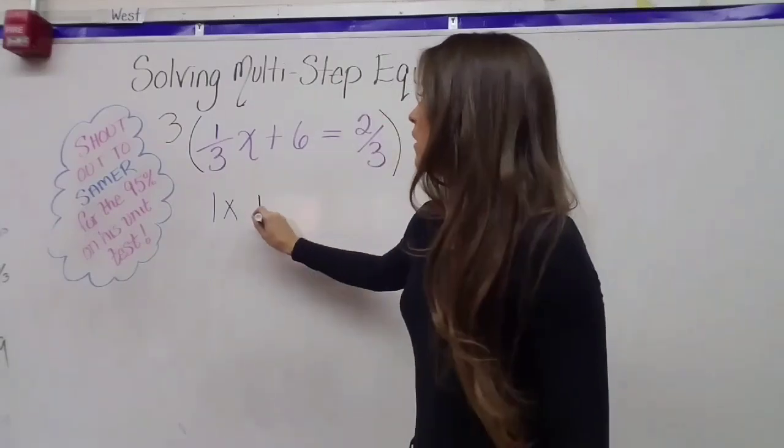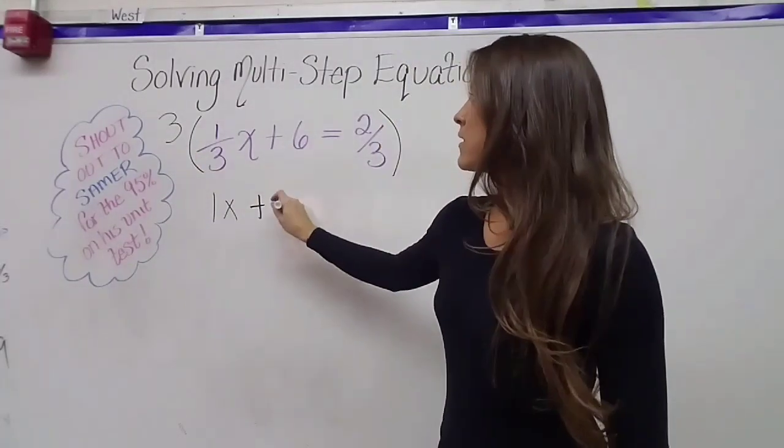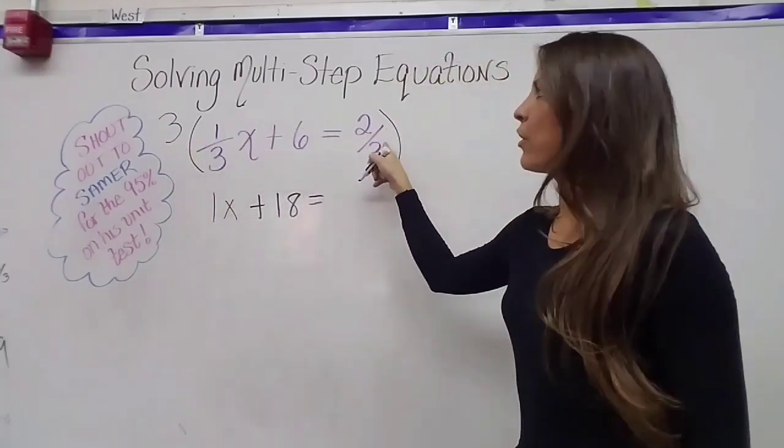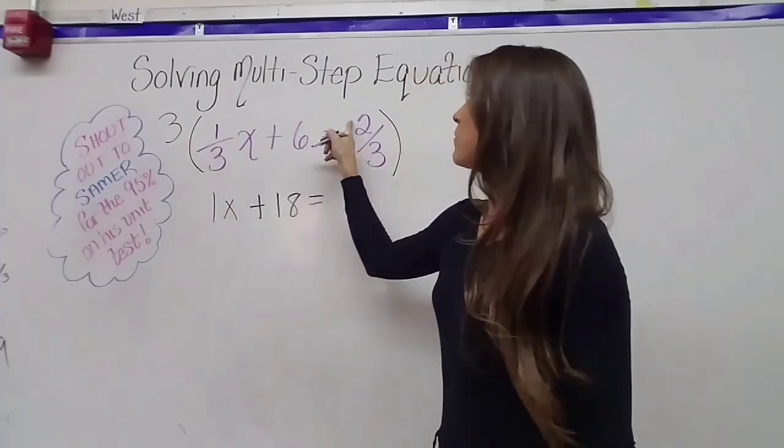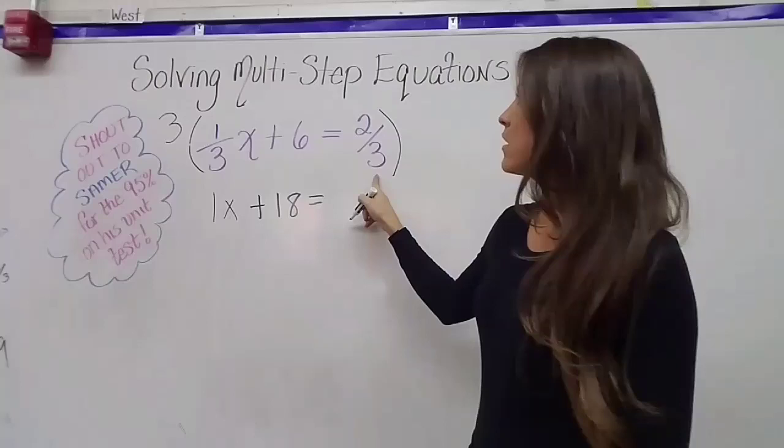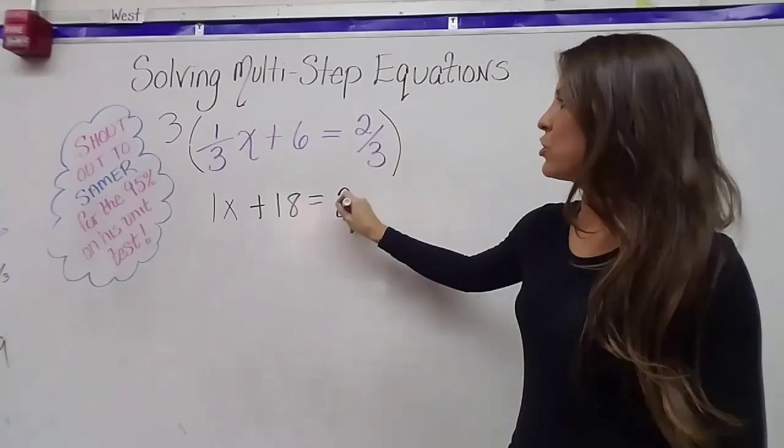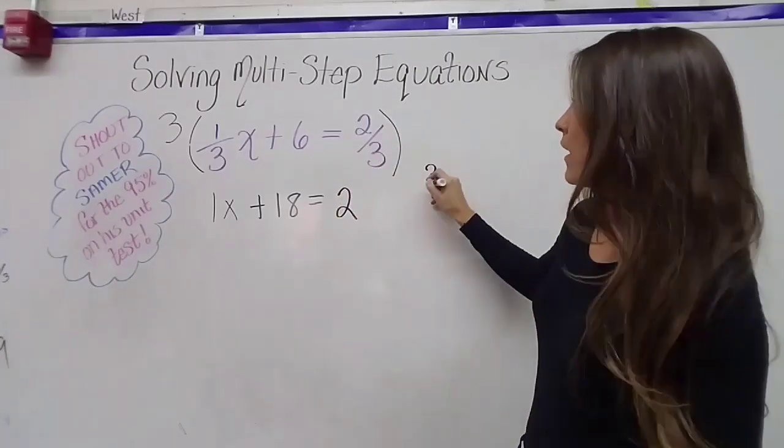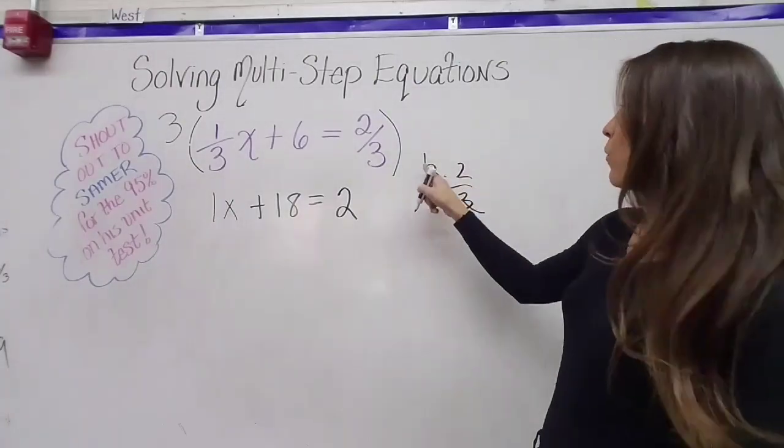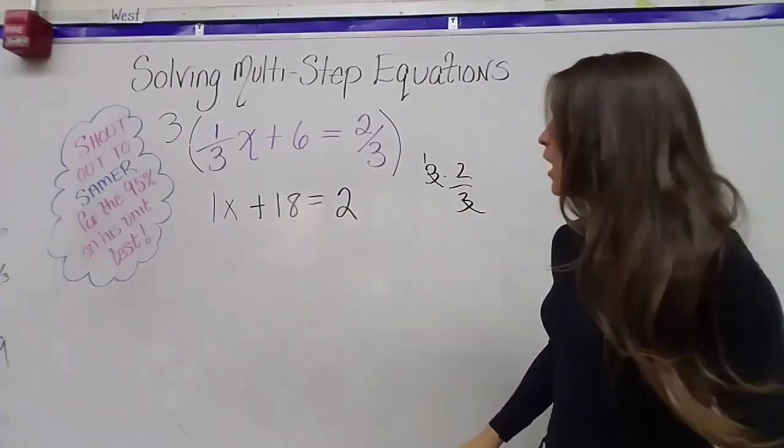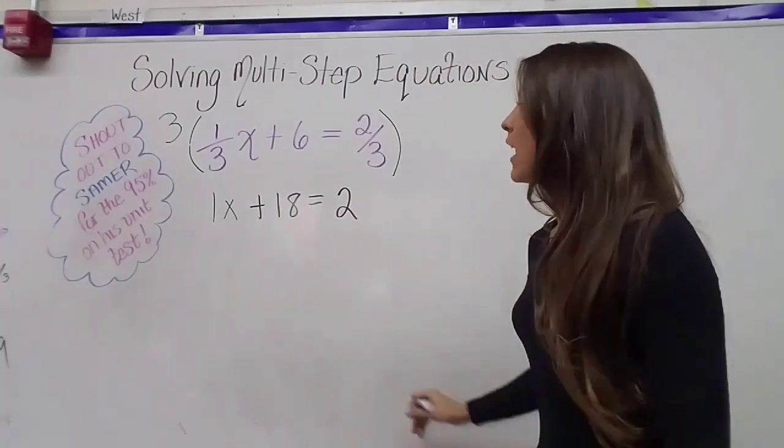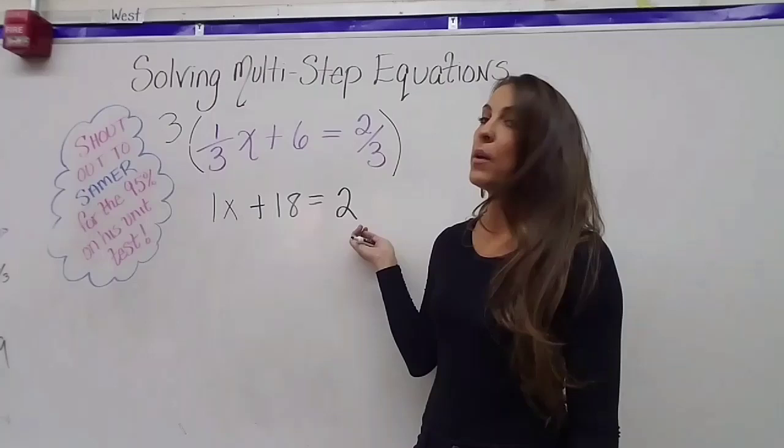Plus three times positive six is 18, equals three times two-thirds. Again, you can do it the long way, which would be to say three times two is six, and invisible one times three is three, six divided by three is two. Or you can just realize that three goes into three once, and then one times two is two. So we've done it. We just wiped out our entire equation of fractions, and now we have a really nice one-step equation.